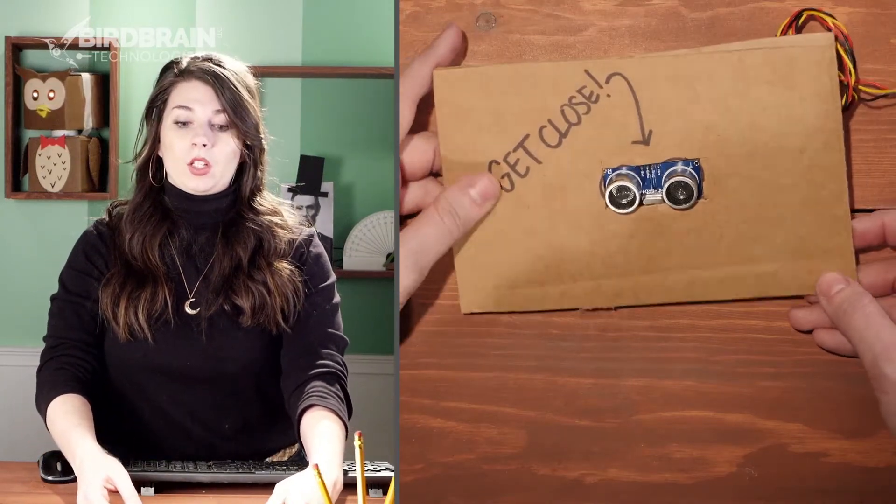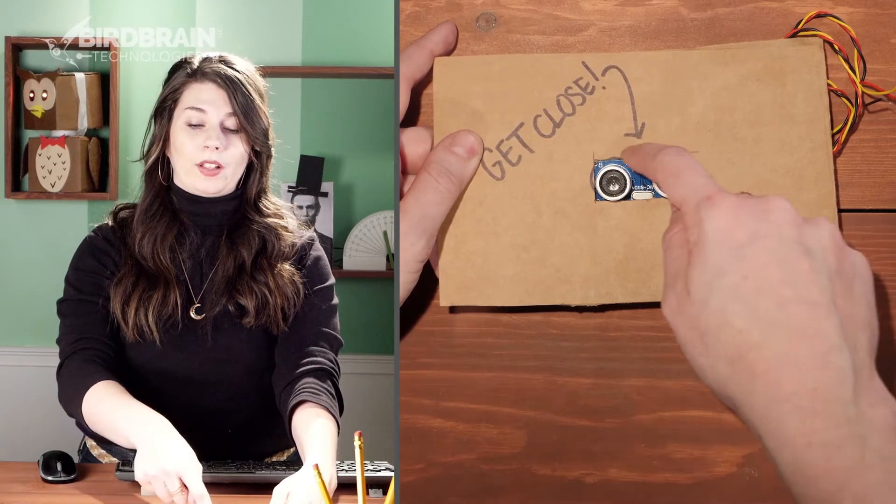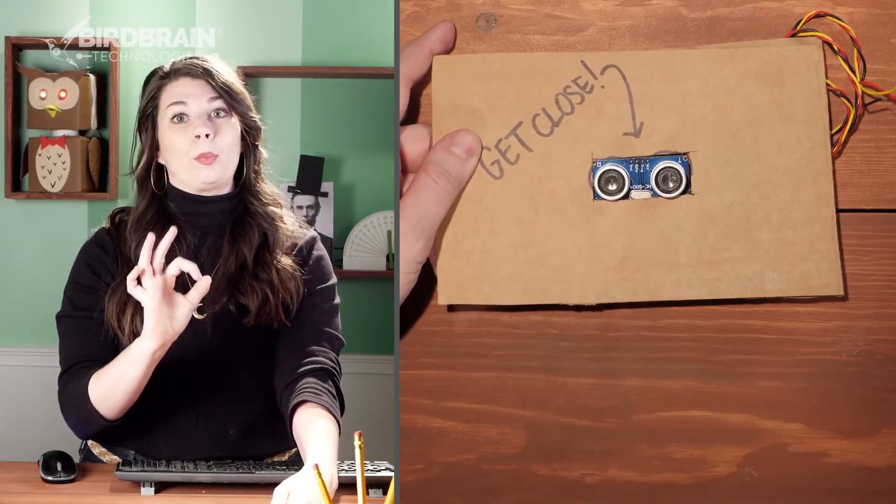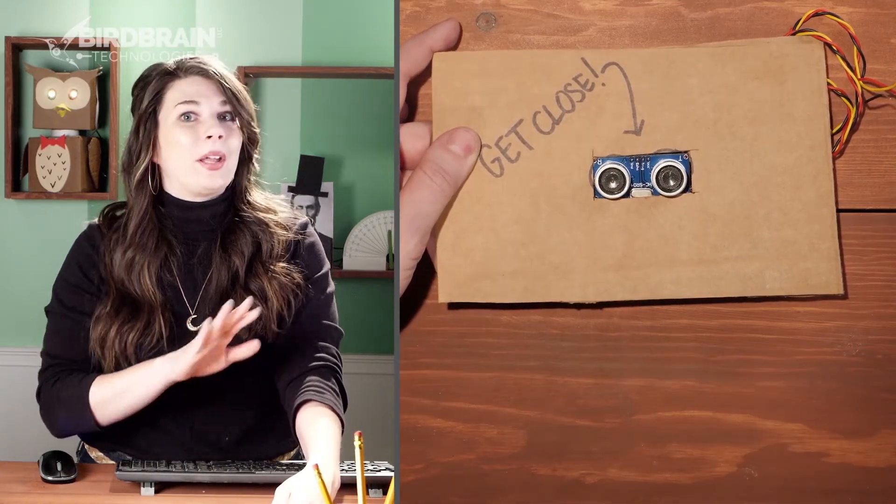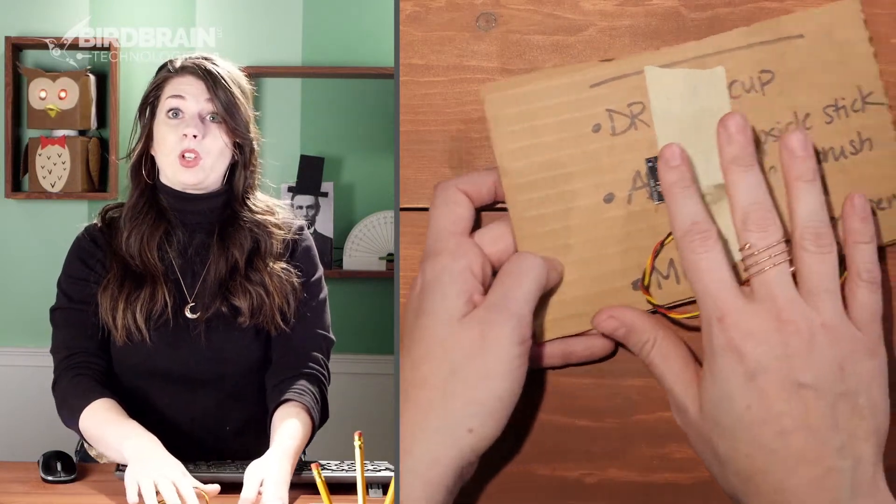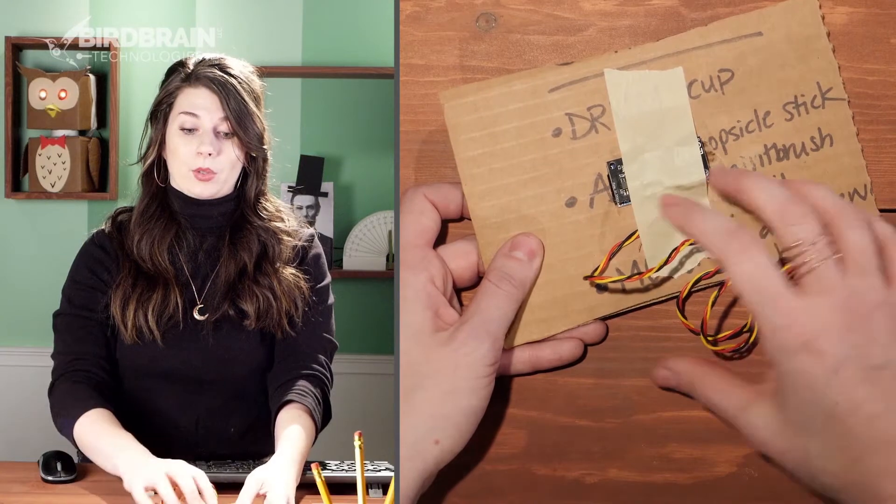So in this version here, to incorporate a distance sensor, you might cut a hole that's just big enough for the silver cylindrical pieces, or the silver circles, to poke through your cardboard, but not big enough that the backing of the distance sensor goes through. So you want that to stay behind, and then you can just tape that in place.